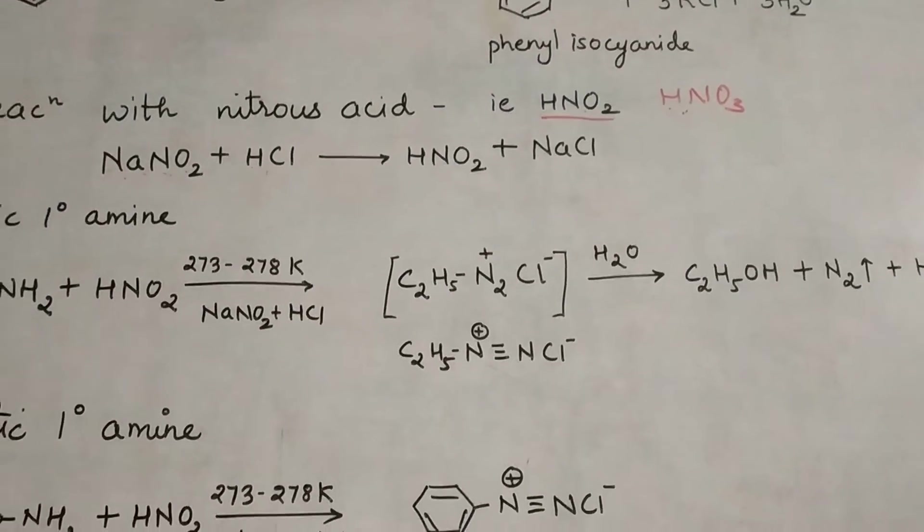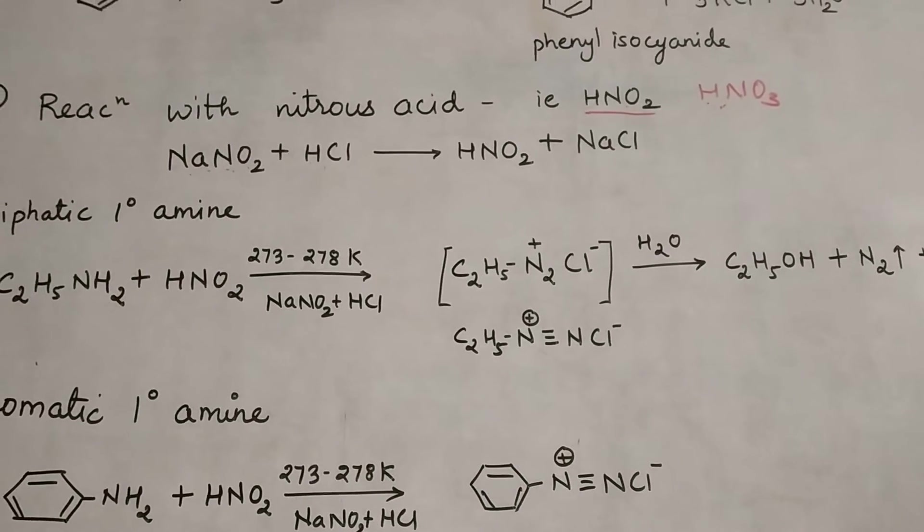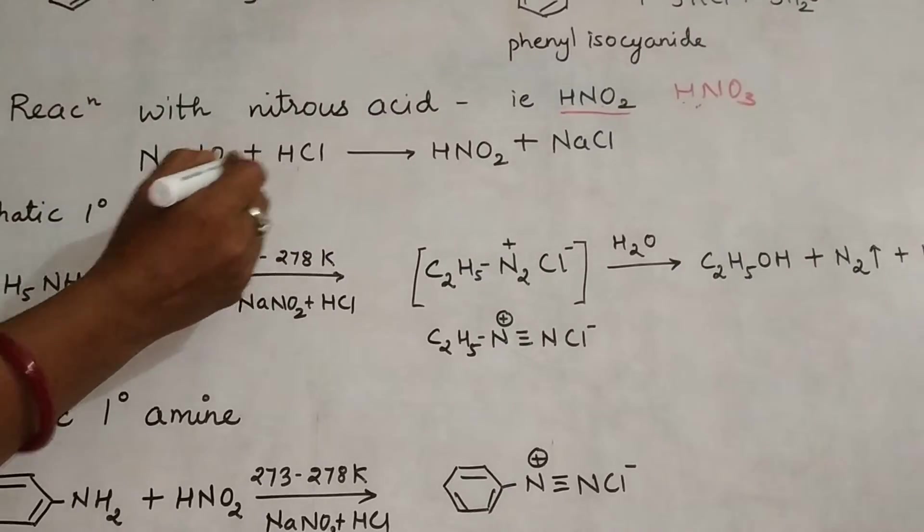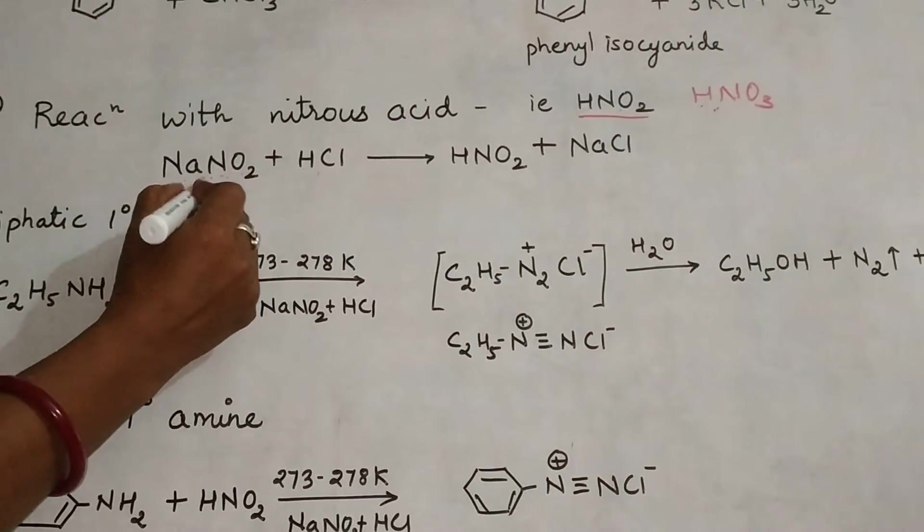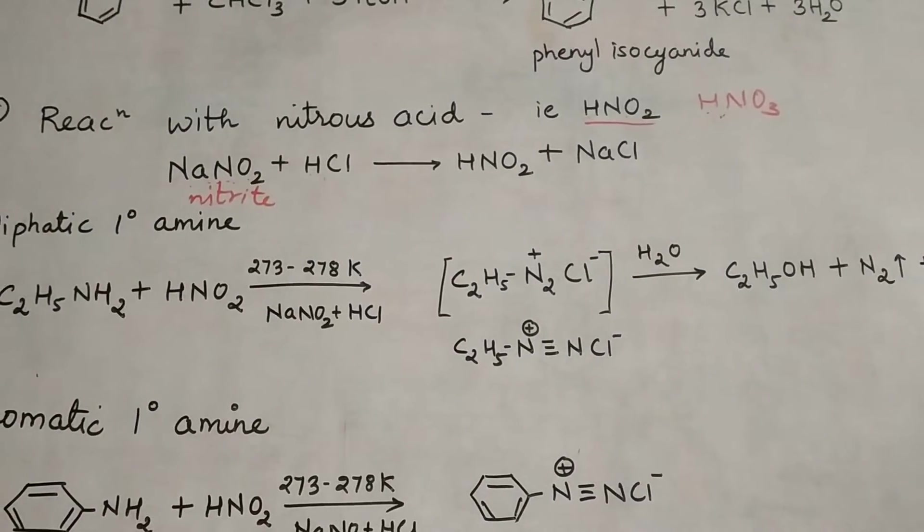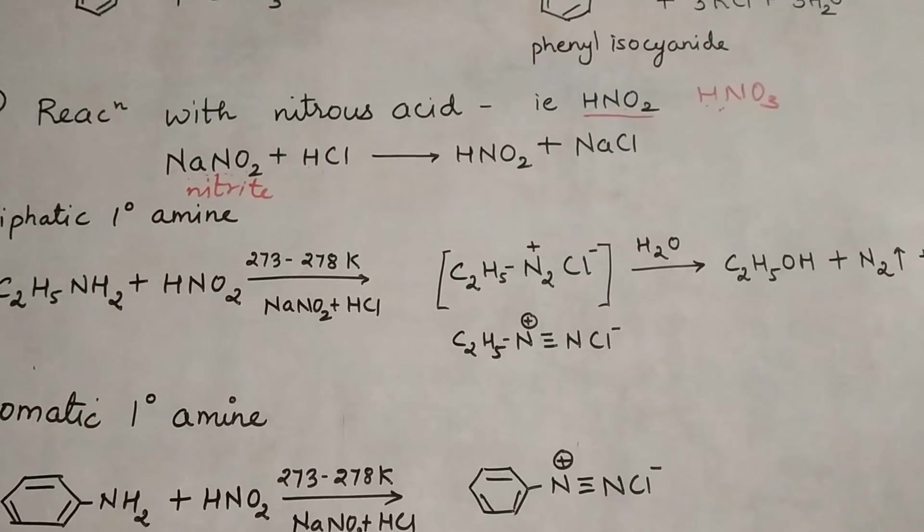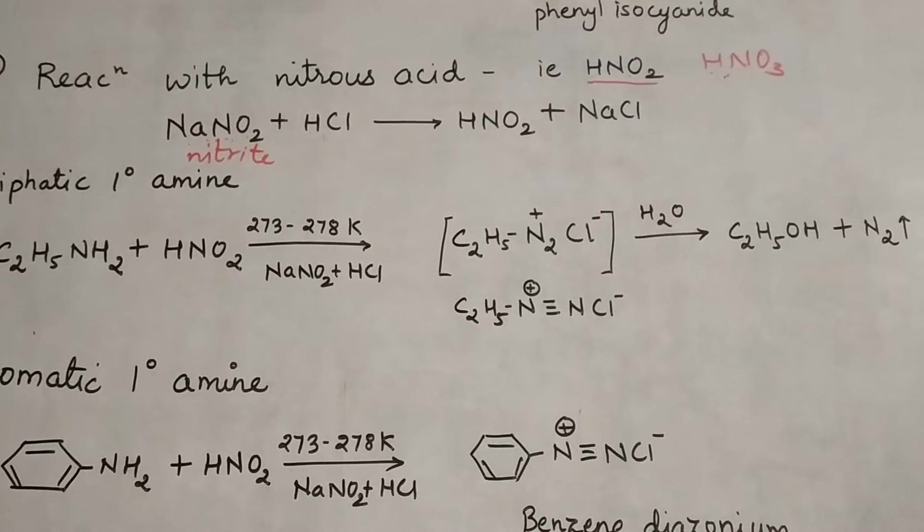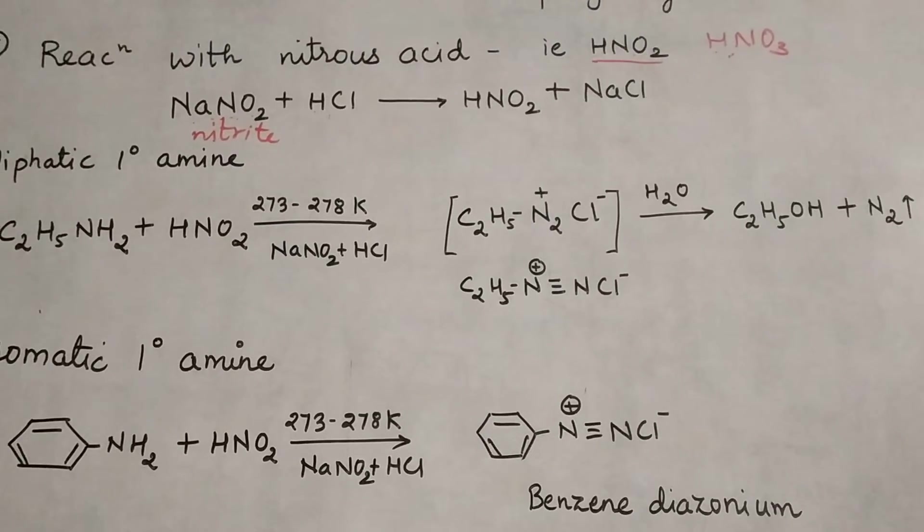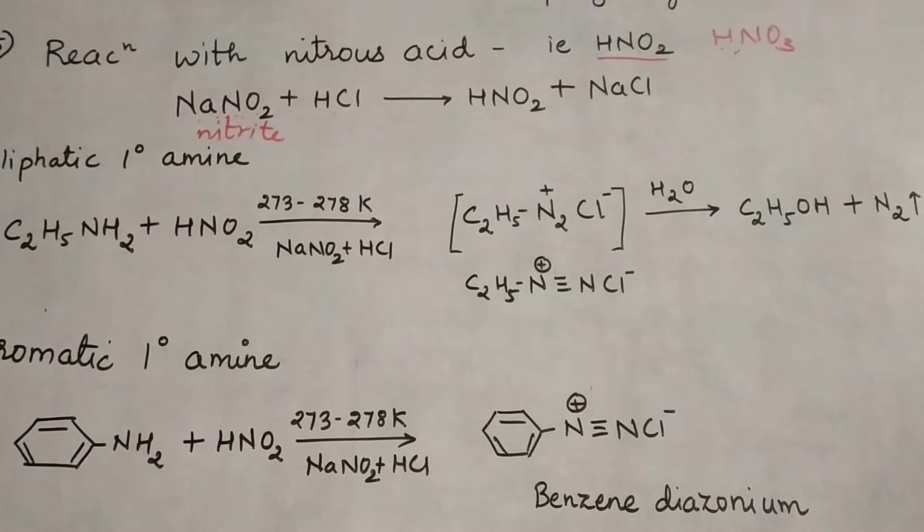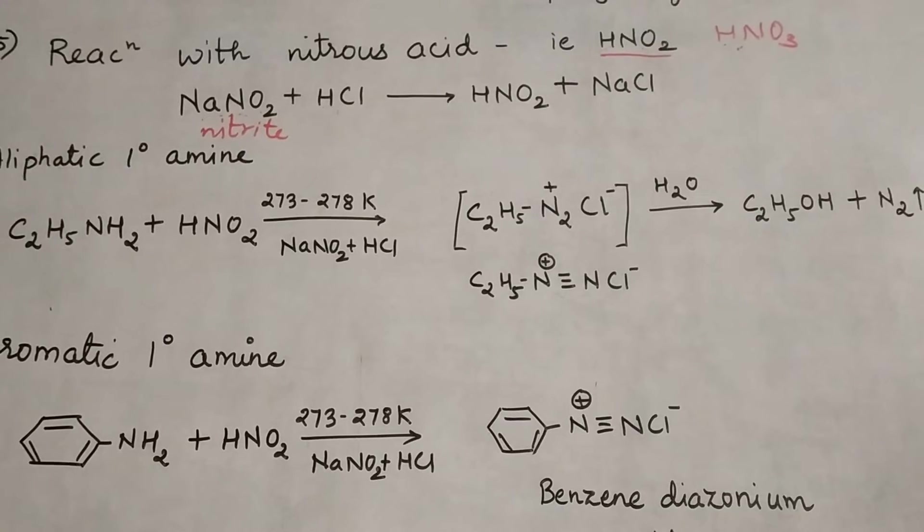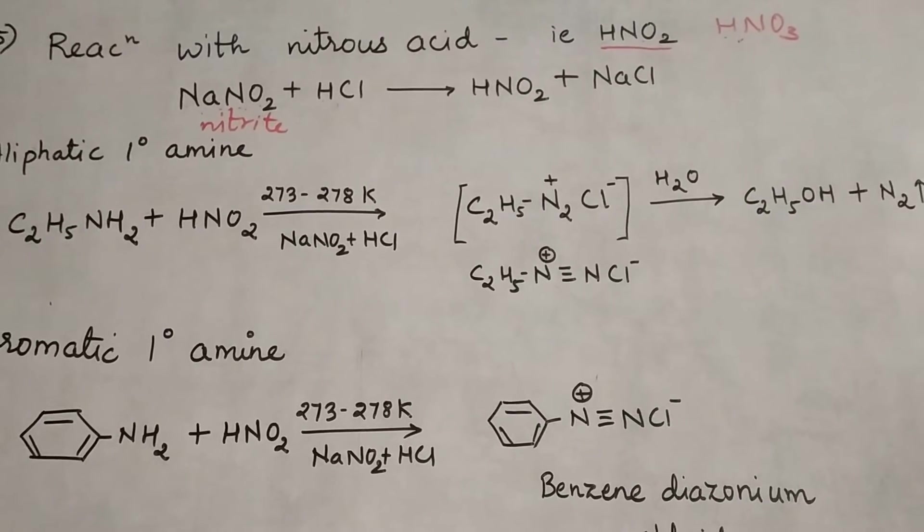Nitrous acid forms during the reaction. To obtain nitrous acid, we use a mixture of NaNO2 (sodium nitrite) and HCl, which generates HNO2 in the reaction mixture. This is a test to distinguish between primary, secondary, and tertiary amines. We'll discuss the reaction with primary amines, both aliphatic and aromatic.